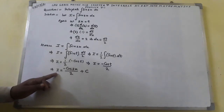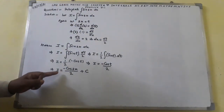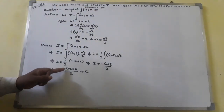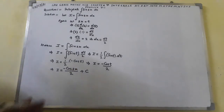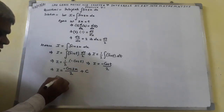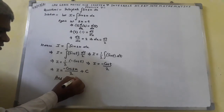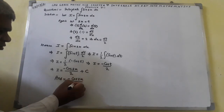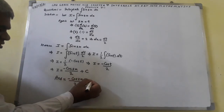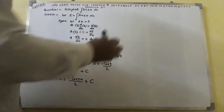So here we have got: the integral of sin(2x) dx comes out to be I equal to −cos(2x)/2 + c. This is the correct answer. Now I shall take the second question.